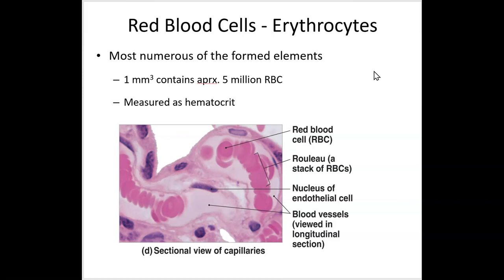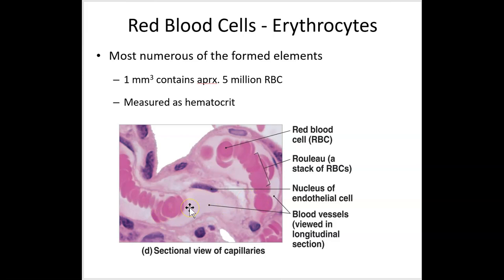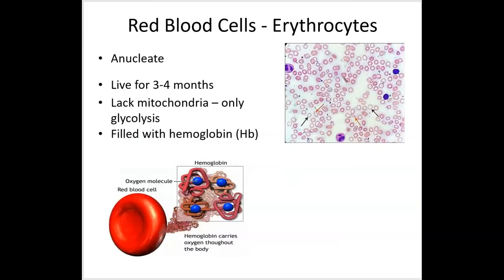One of the tools we use to measure them is called hematocrit — it's actually the percent of the red blood cells in a sample. What you're seeing here is a capillary. Capillaries are the smallest of the blood vessels. Notice how these red blood cells can twist and bend as they move through the capillaries, because they're going to have a specialized structure.